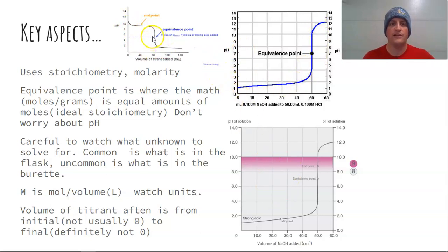So some key aspects here. You have, usually they like using some graphs here, some examples. The equivalence point. The equivalence point is when the moles of one equals the moles of the other. So this uses stoichiometry and molarity. That's why we've talked about both prior to this. Equivalence point, it's again where those are equal amounts, ideal stoichiometry.